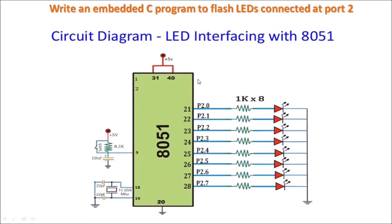We are going to use this interfacing diagram. To this 8051 you can connect a reset circuit where an 8.2 kilo ohm resistor is connected to plus 5 volt supply and the reset terminal, that is pin number 9 of 8051. A capacitor is connected between pin number 9 and ground; value of capacitor is 10 microfarad. The crystal is connected between pin number 18 and pin number 19, using 11.0592 megahertz.